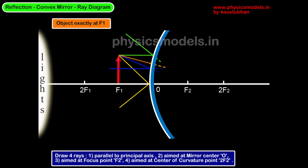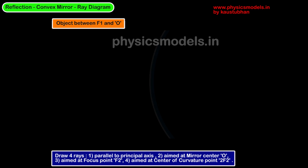As we extend them backwards, we get the image, which is once again between O and F2. It is virtual, erect, and diminished in size. We are seeing a consistent pattern for the image. No matter where we keep the object, we are getting the image in more or less the same position and type.